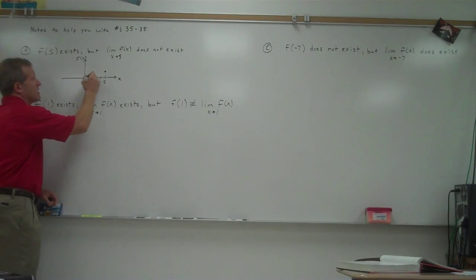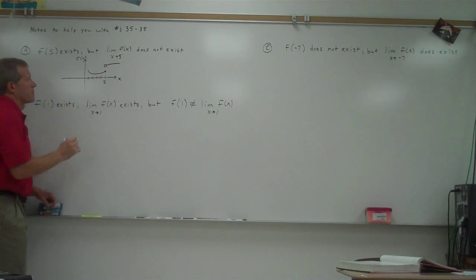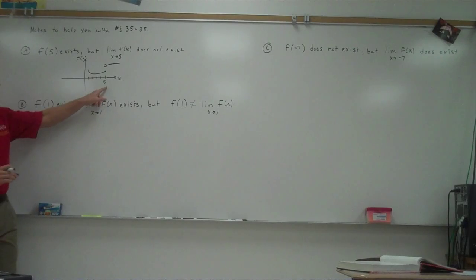So I could just do something like this. That would be a situation where f of 5 would exist right there. But the two-sided limit would not exist because the left-hand limit would be lower than the right-hand limit. Any questions about that first example?